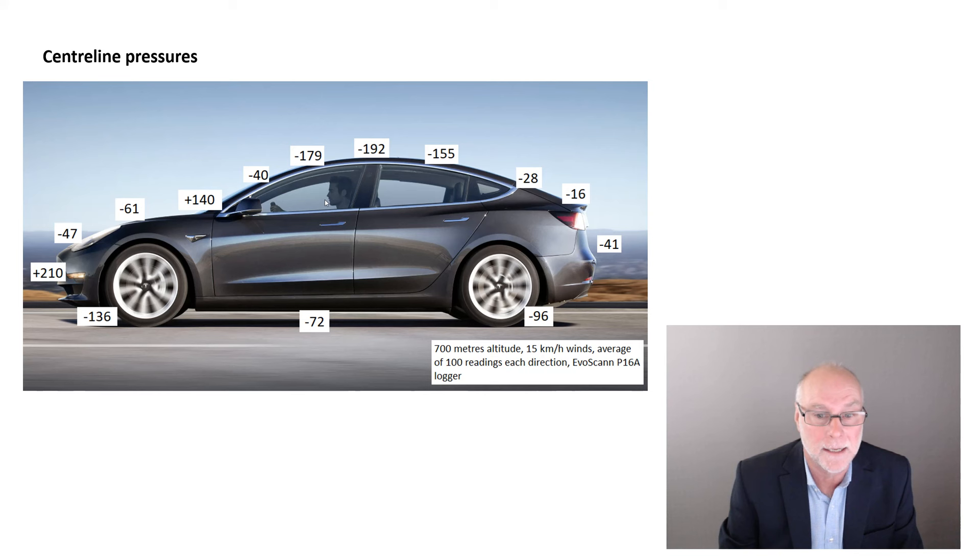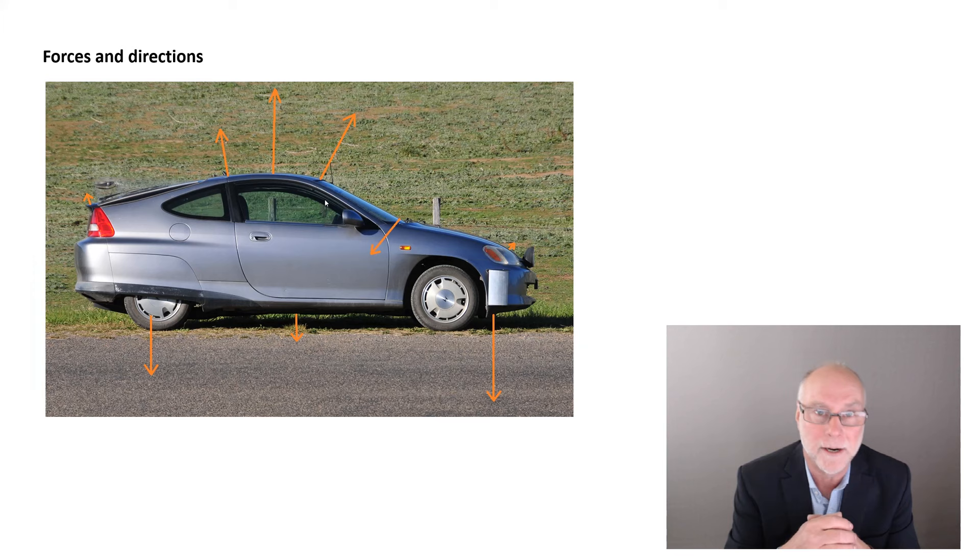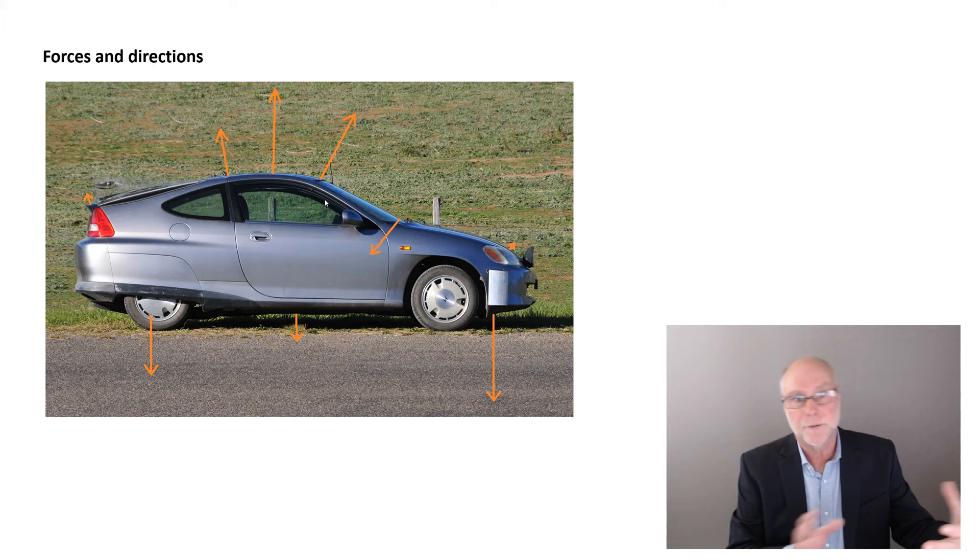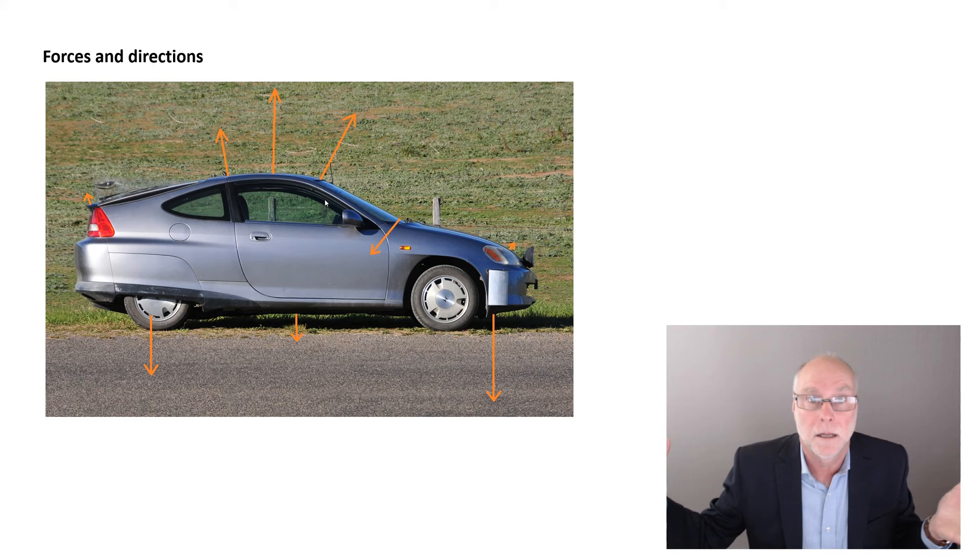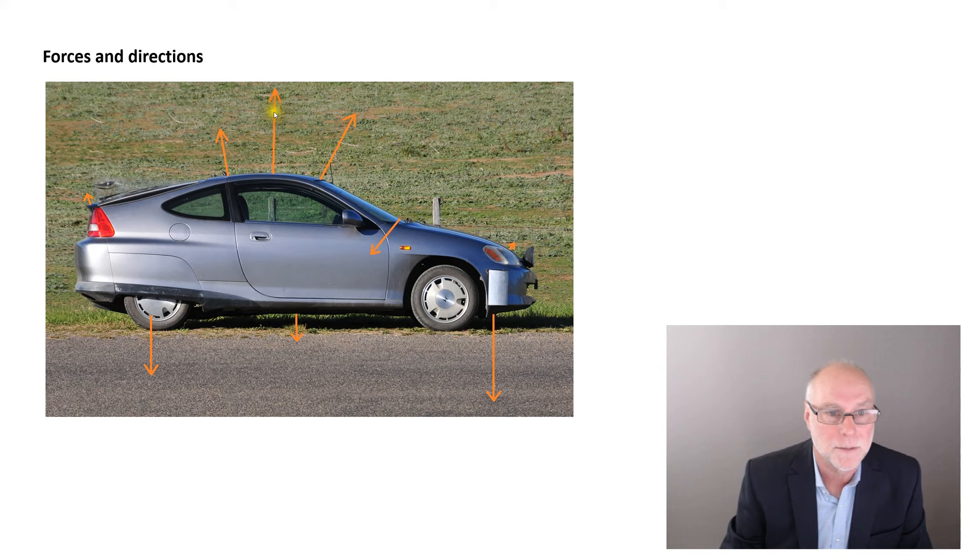What I've done here is I've measured, again, centreline pressures. This is on one of my cars, a Honda Insight. It's a heavily modified Insight, which actually develops downforce. It develops downforce primarily through the shaped under trays under the car. But what I've done is I've drawn arrows, and the length of the arrow is proportional to the pressures. So, the longer arrow means a greater pressure, in this case a low pressure. The direction the arrow points in is where that force is acting, where that pull is acting. So, we can see on top of the roof, the pull is directly upwards. The pull always acts at right angles to the panel.